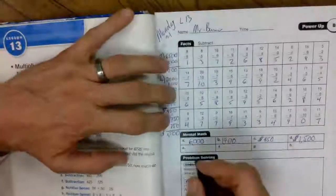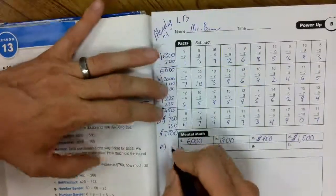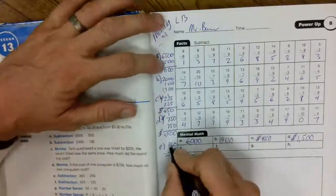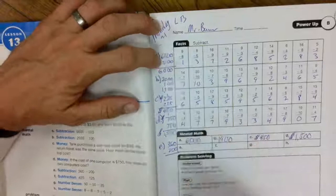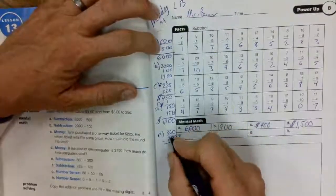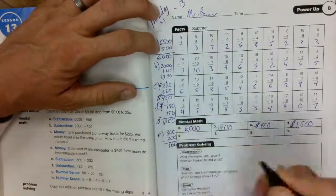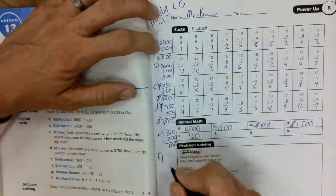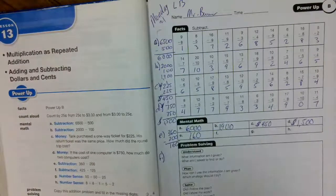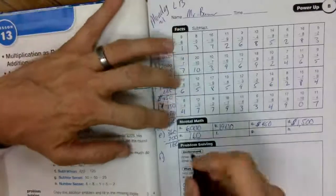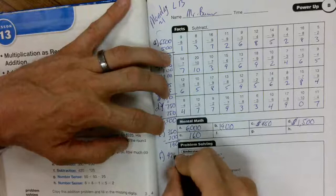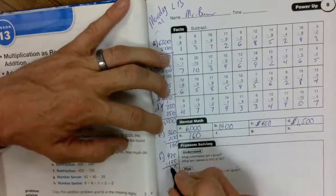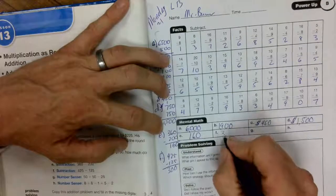Halfway. E. Subtract. We have 360 minus 200. That's really like saying 3 minus 2. Pretty easy. 0 minus 0 is 0. 6 minus 0 is 6. And 3 minus 2 is 1. 160. Hopefully, if you're saying it out loud, you're getting faster and faster on your addition and subtraction. F. 425 minus 125. 25 minus 25 is 0. 4 minus 1 is 3. 300.